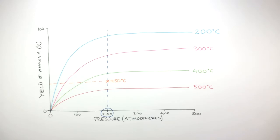The rest of this video will focus on why a pressure of 200 atmospheres and temperature of 450 degrees Celsius are chosen, even though the yield of ammonia is potentially lower than what could be achieved with different conditions.